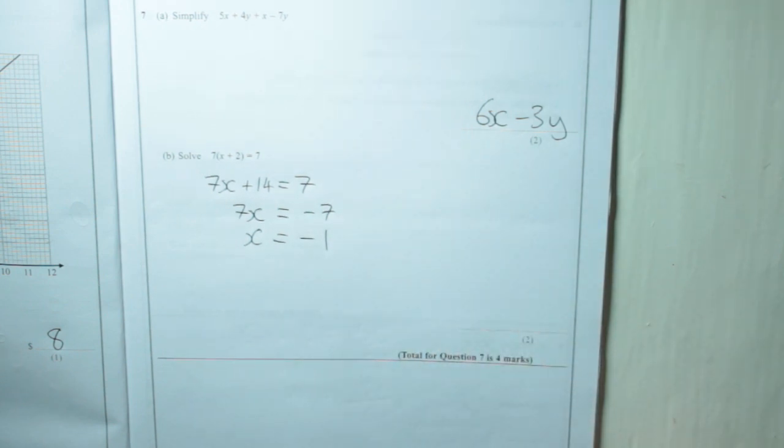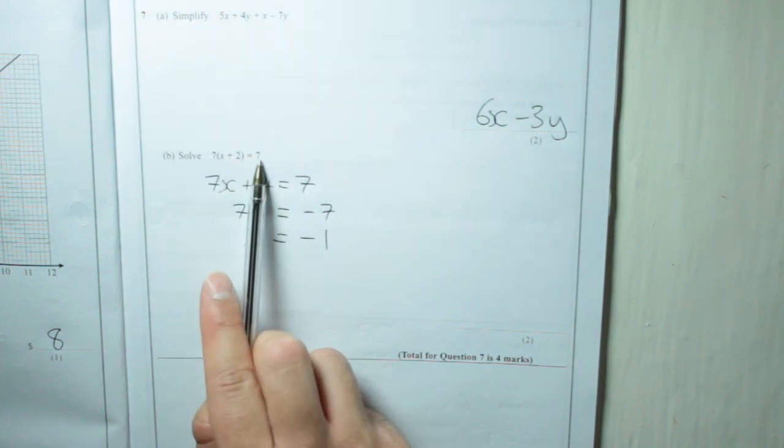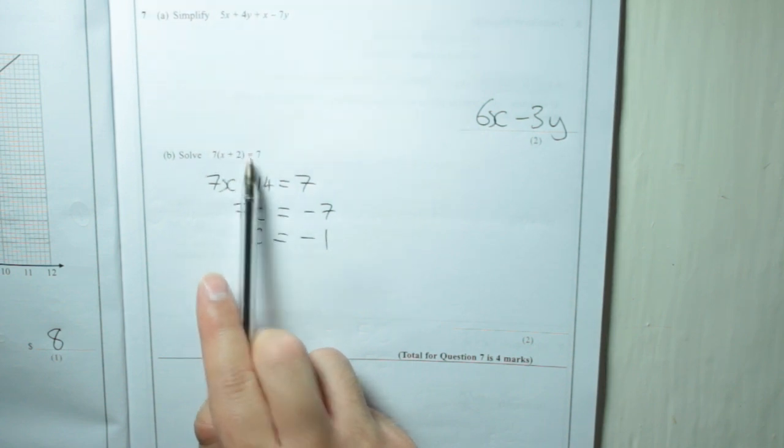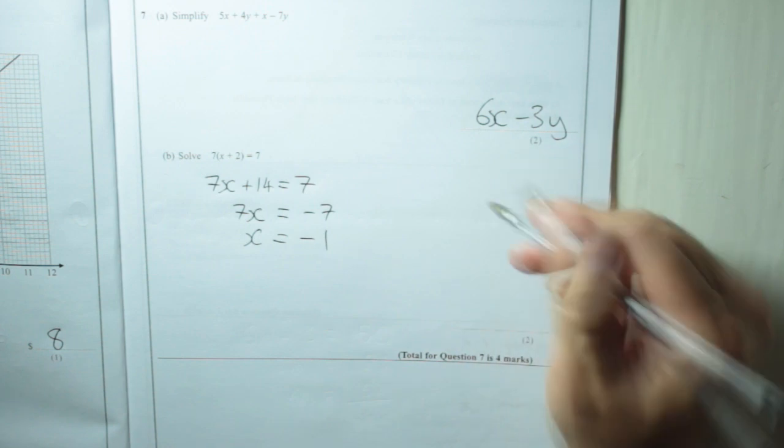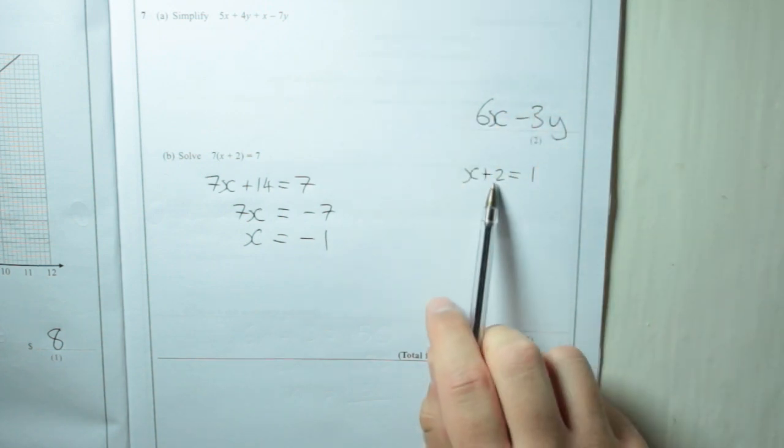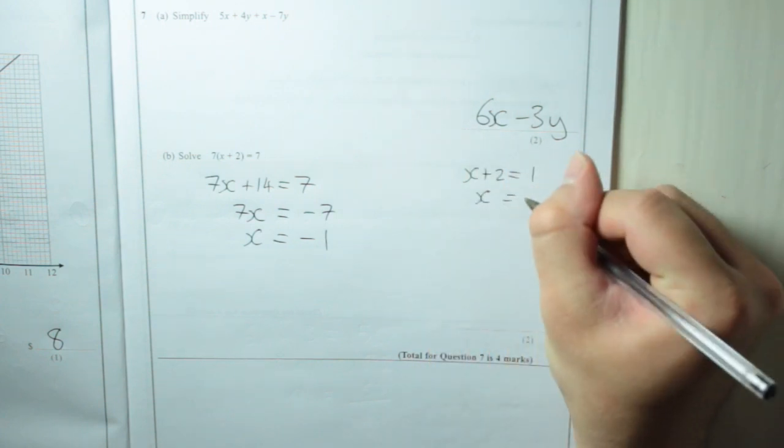Just in case you're interested in what that other method is, you can see that 7 lots of this bracket is 7, so if you divide both sides by 7, you end up with x plus 2 equals 1. If I just write that down here, x plus 2 is equal to 1. Now if you subtract 2 from both sides, you end up with x is equal to minus 1.